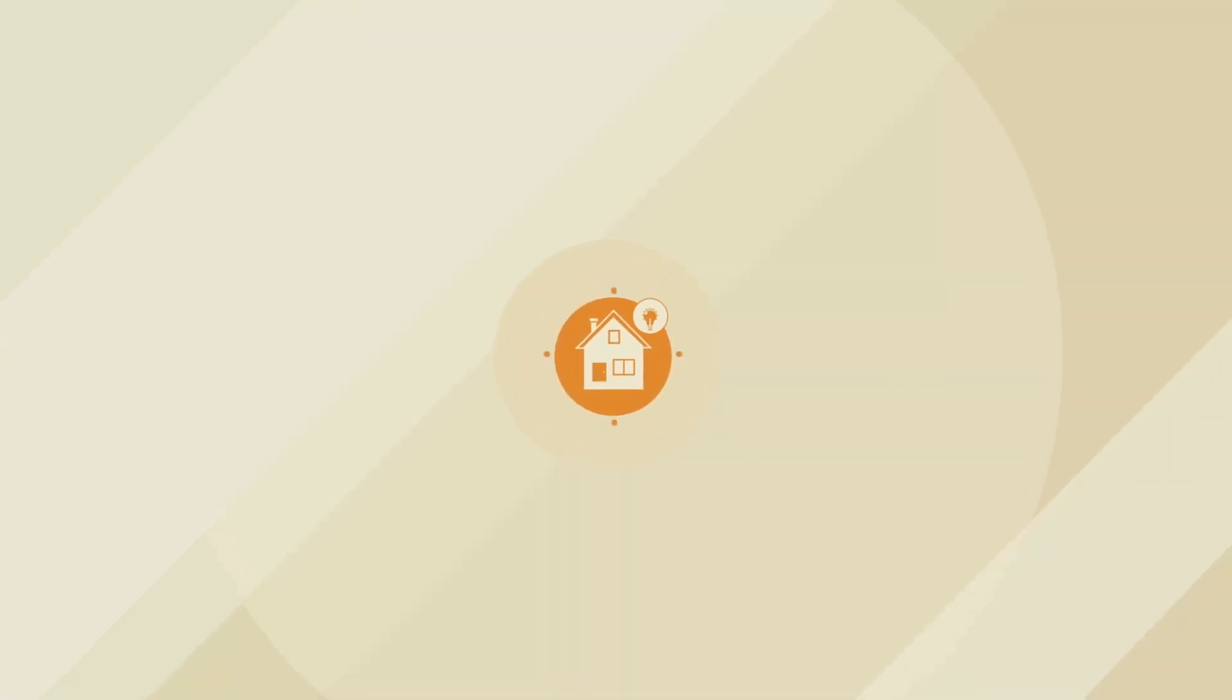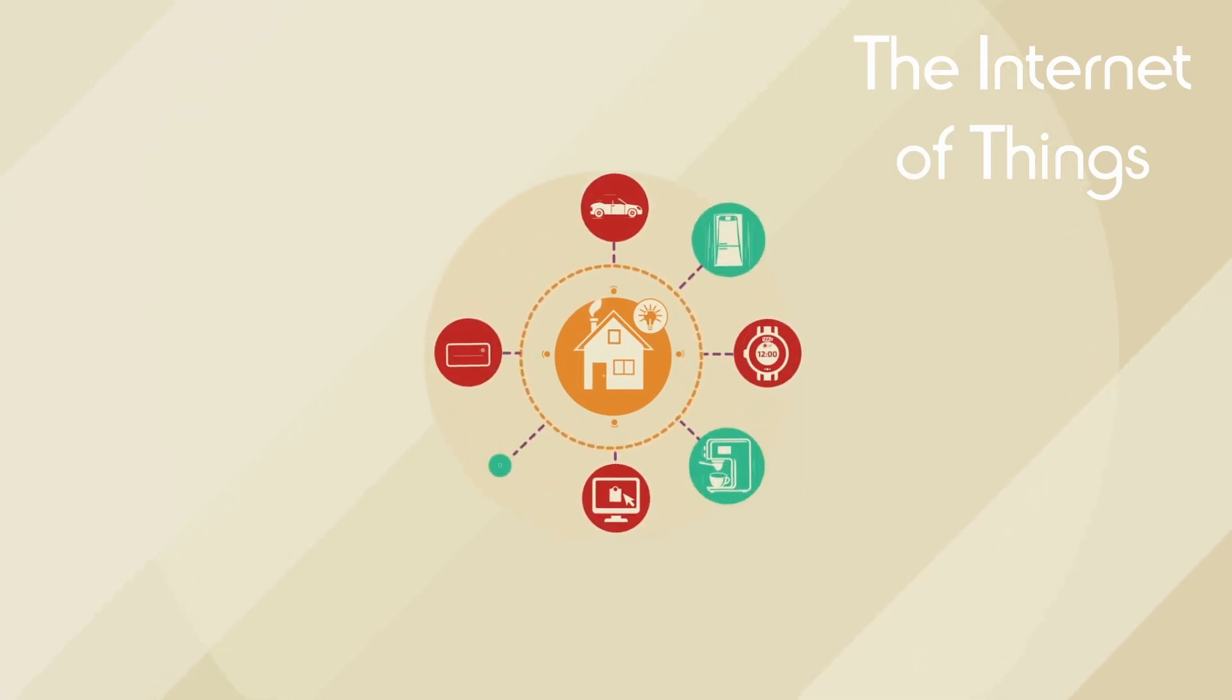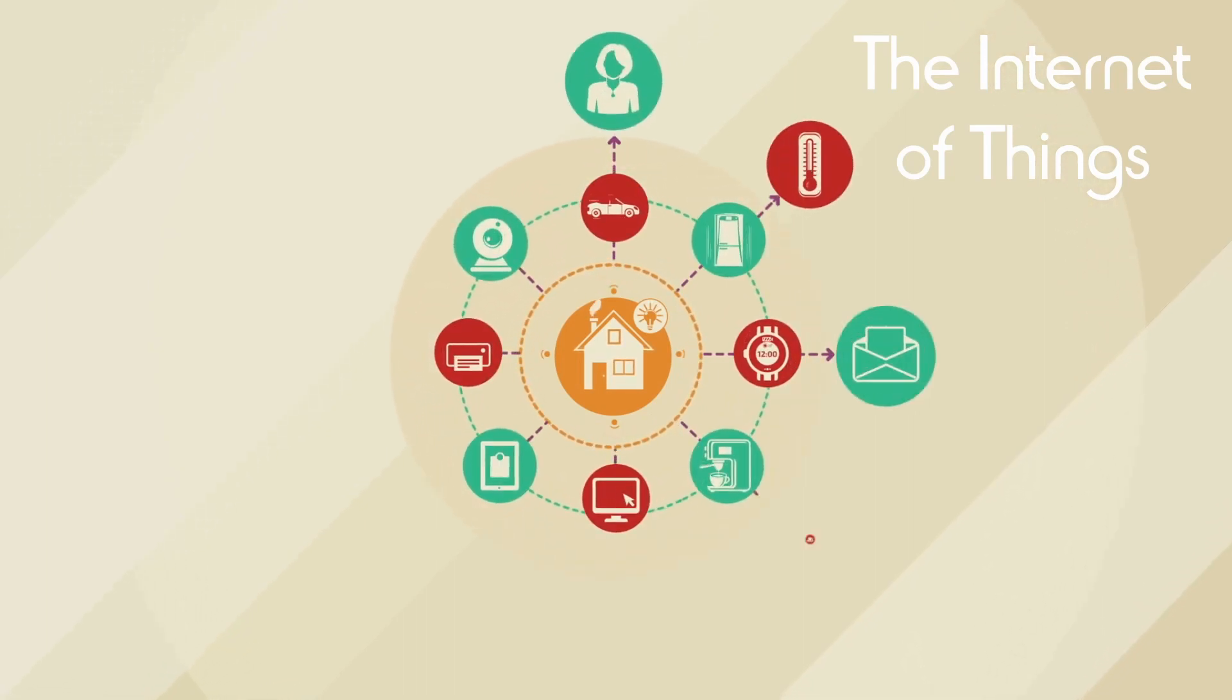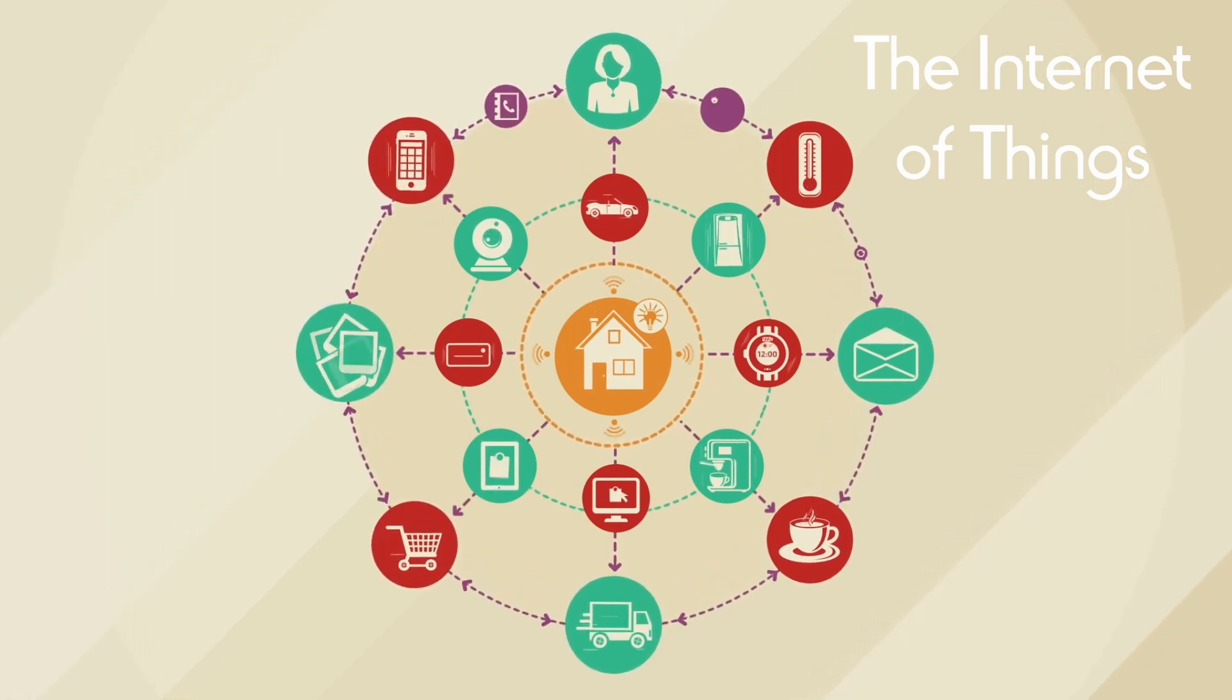New technology called the Internet of Things, which helps automate and control everything from heating and cooling systems to refrigerators, uses radio waves by using Wi-Fi.